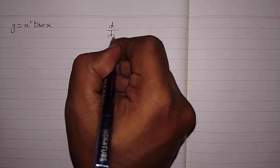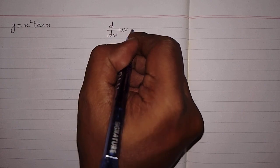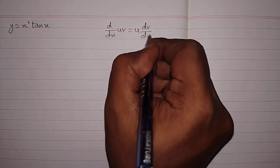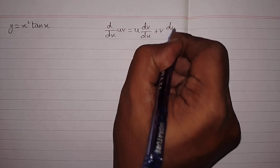So we will apply the product rule of differentiation, which is d/dx of uv equals u times the derivative of v plus v times the derivative of u.